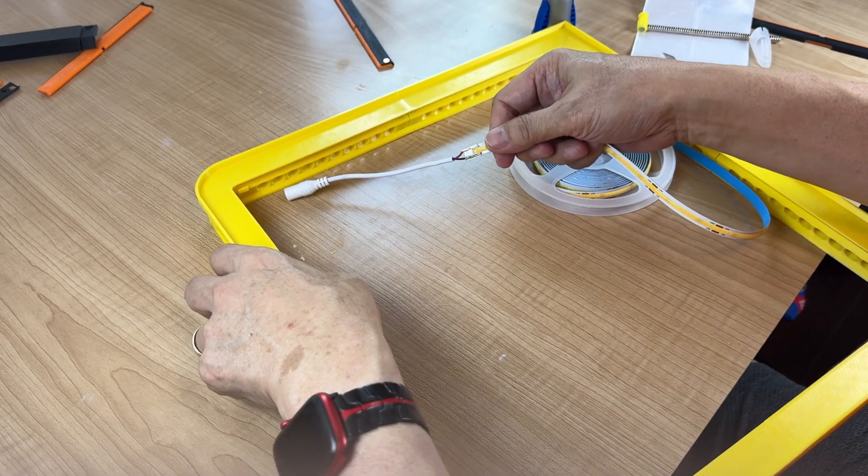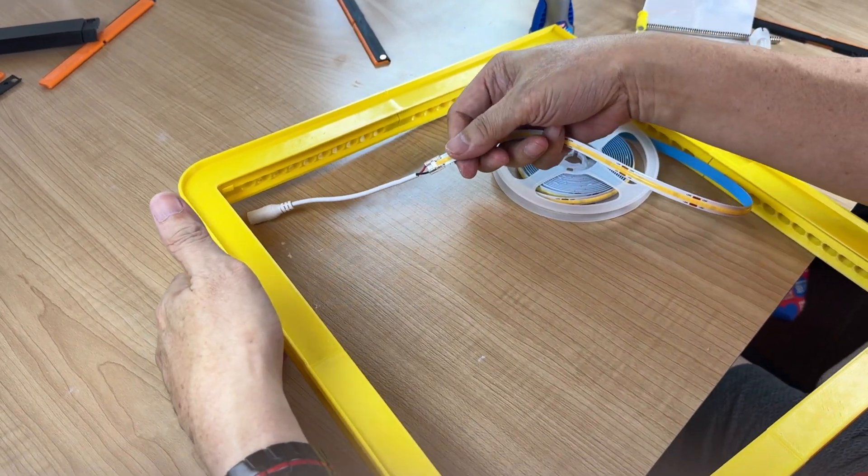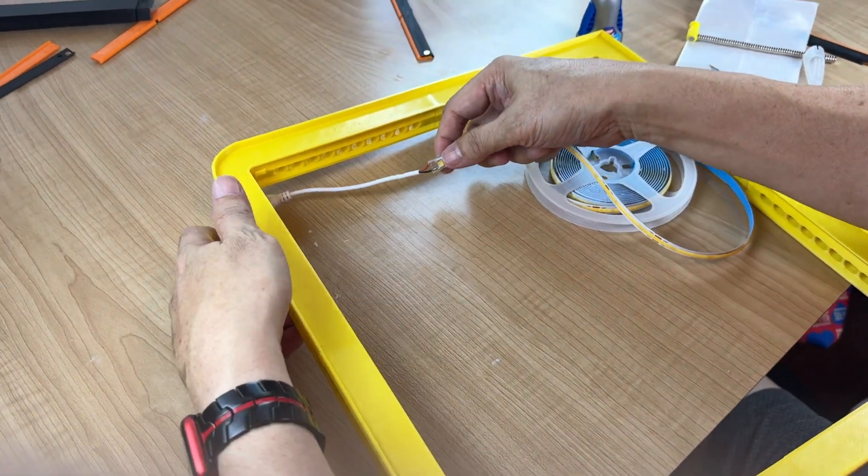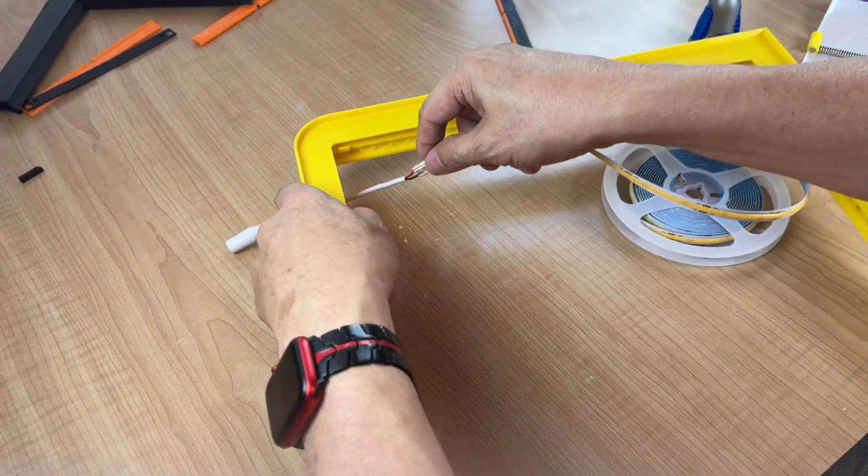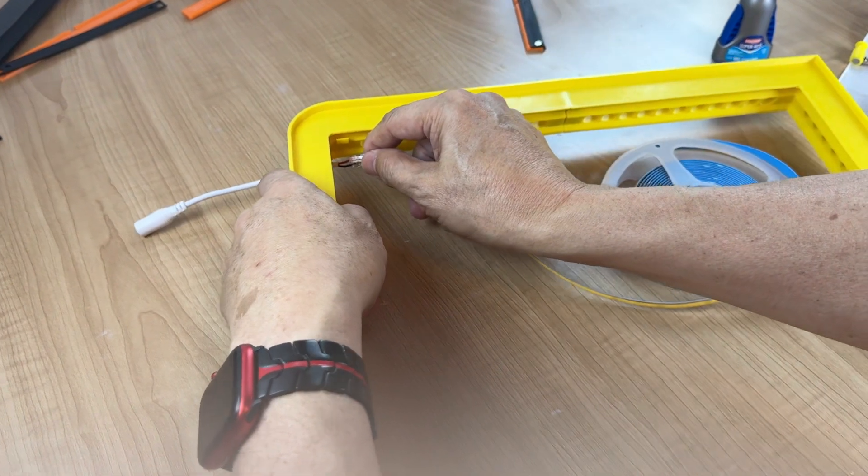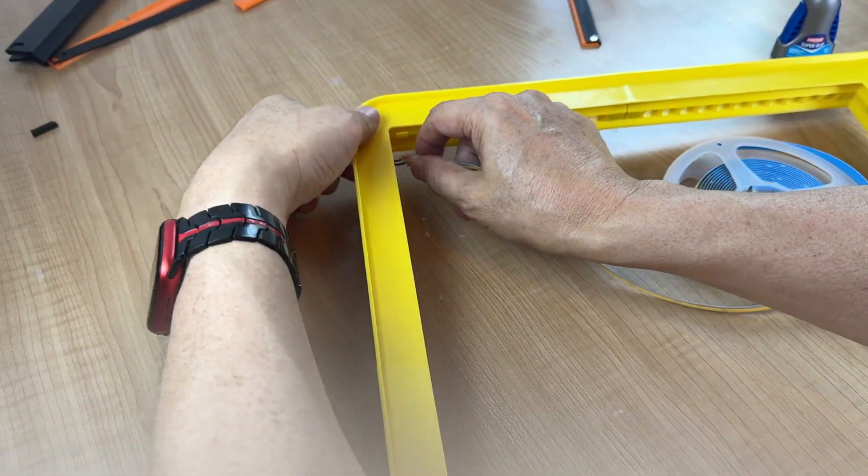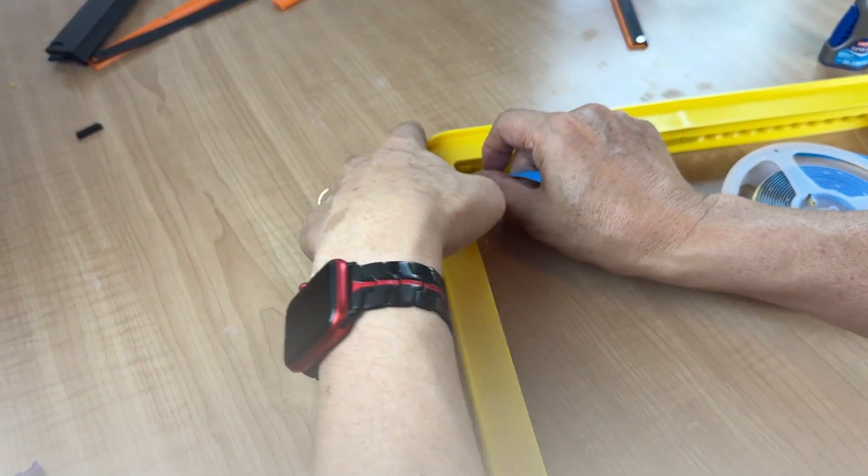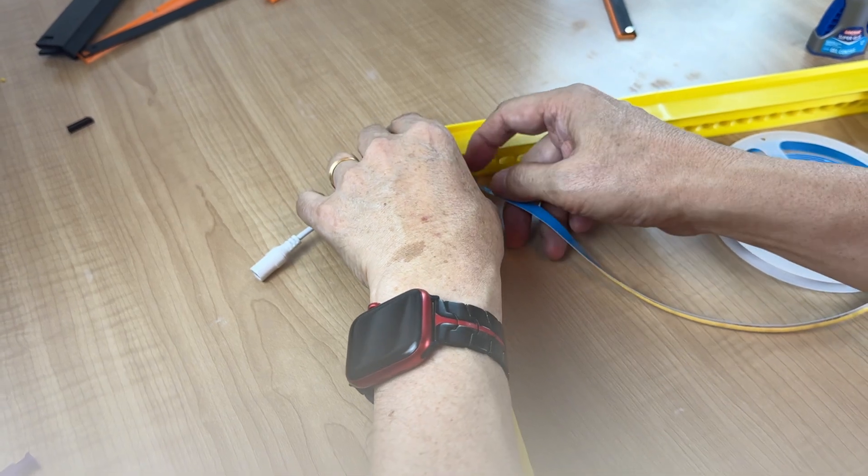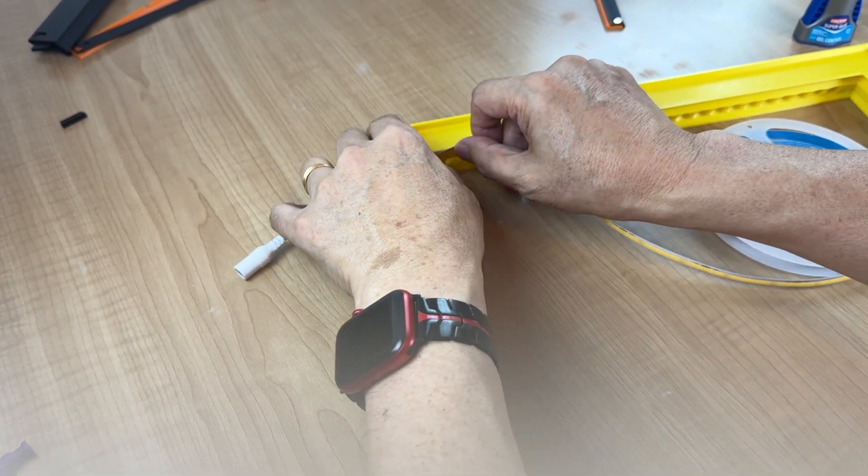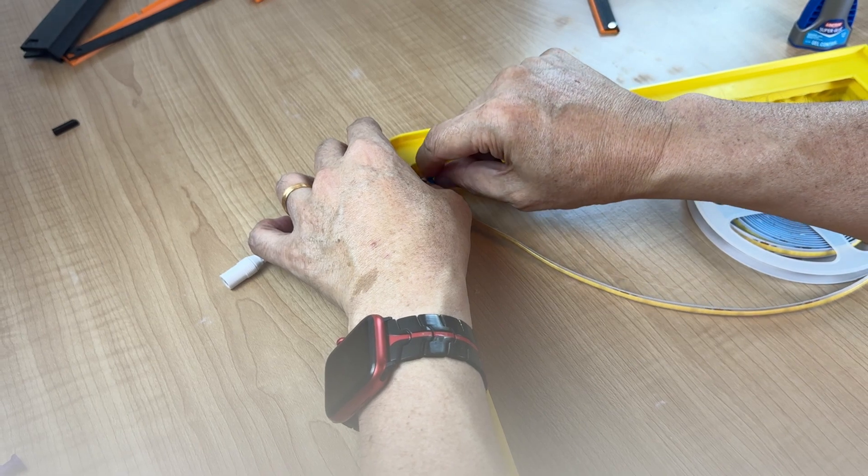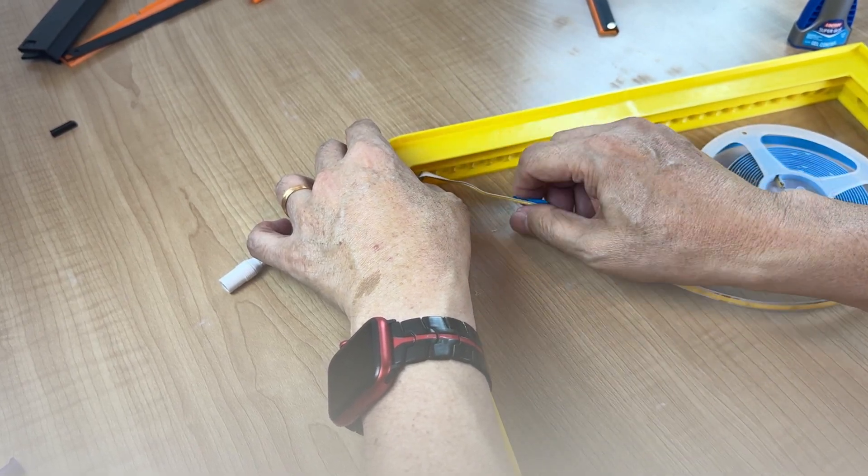Next is we need to install the LED strip onto the main body. There's a hole underneath here and you want to tuck it under the thing. There's a little guide here to hold it in place.